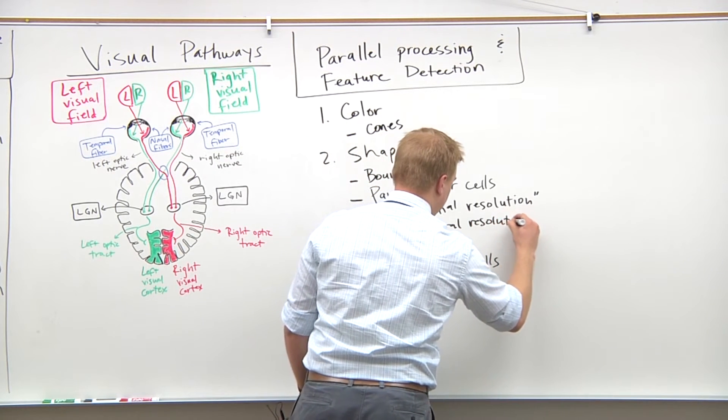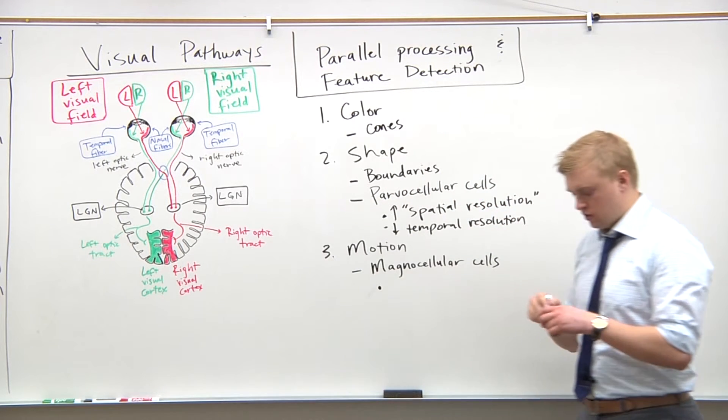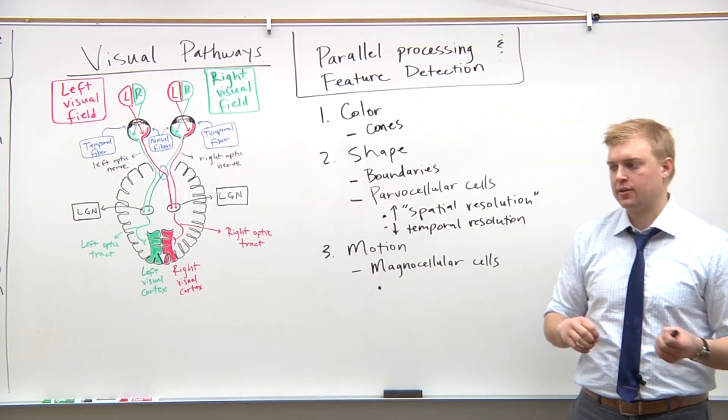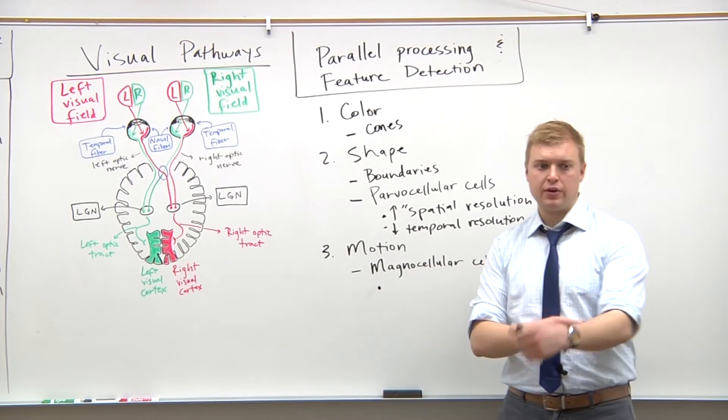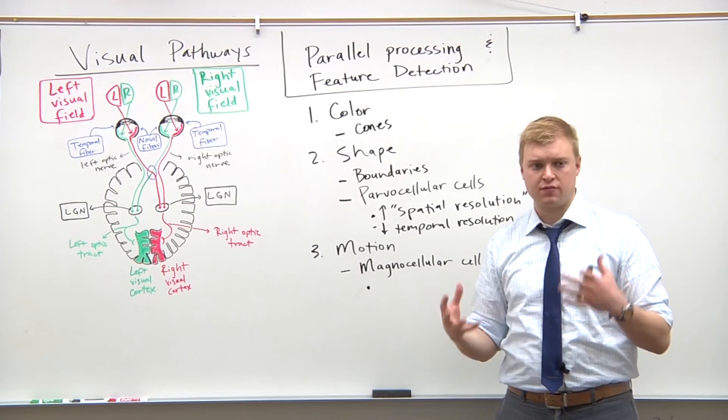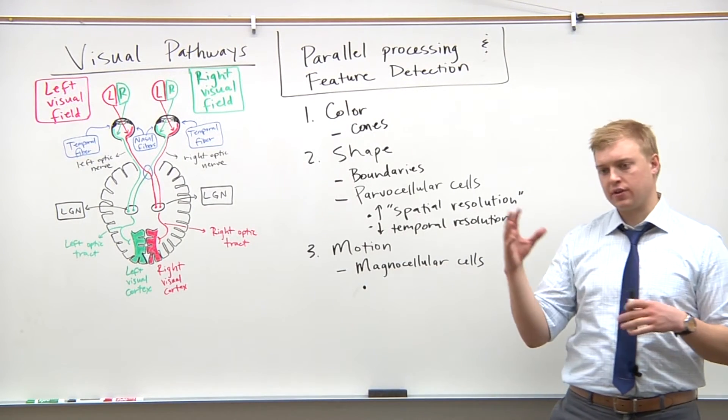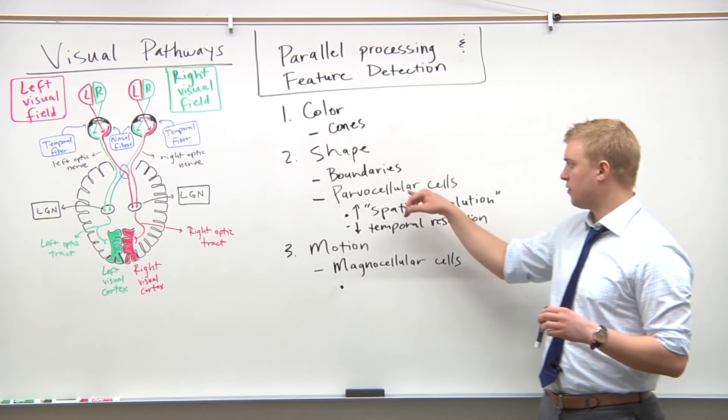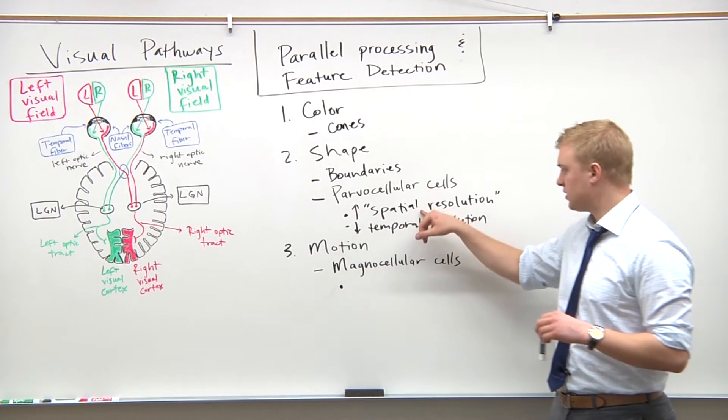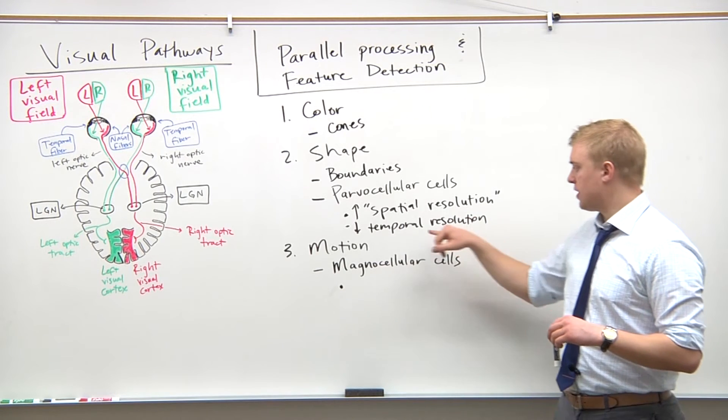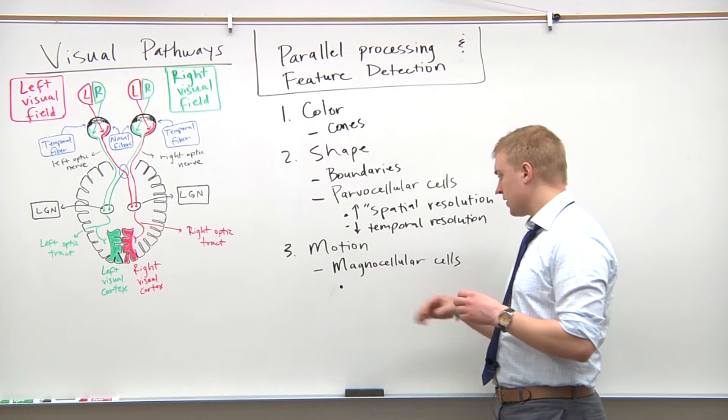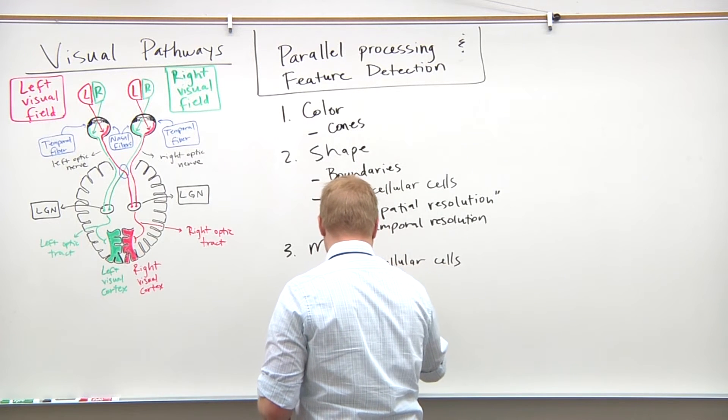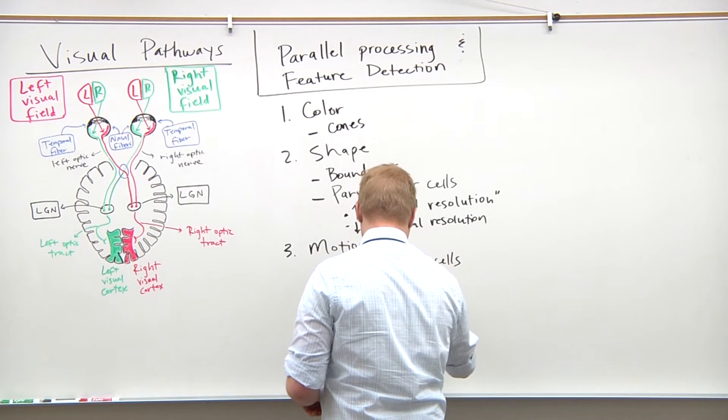And temporal resolution is referring to time. So some video cameras can film 30 frames a second. Other very high speed video cameras can film about 10,000 frames per second. And those that can film 10,000 have a very high temporal resolution. But with the parvocellular cells, that's not the case. They have very high spatial resolution but they have very low temporal resolution. Now the magnocellular cells, they do have high temporal resolution.